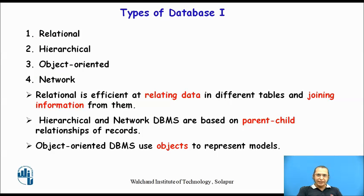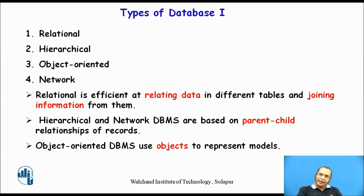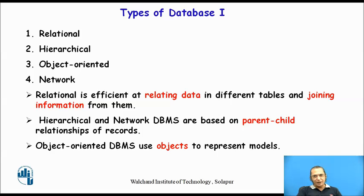Now, once we understand the difference between data and a database — data is simply the description of things, events or activities, while database is storing all that data in a systematic way — we can say that there are different types of databases. The first way of categorizing the database is dependent upon how the database is being designed, and there are four popular types.